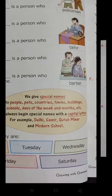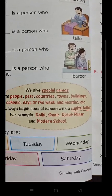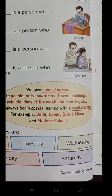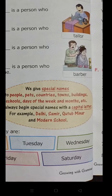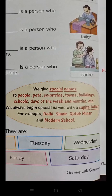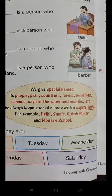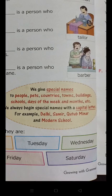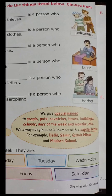We give special names to people, pets, countries, towns, buildings, schools, days of the week, and months. We always begin special names with a capital letter. For example: Delhi, Samir, Kutamina, and Modern School.